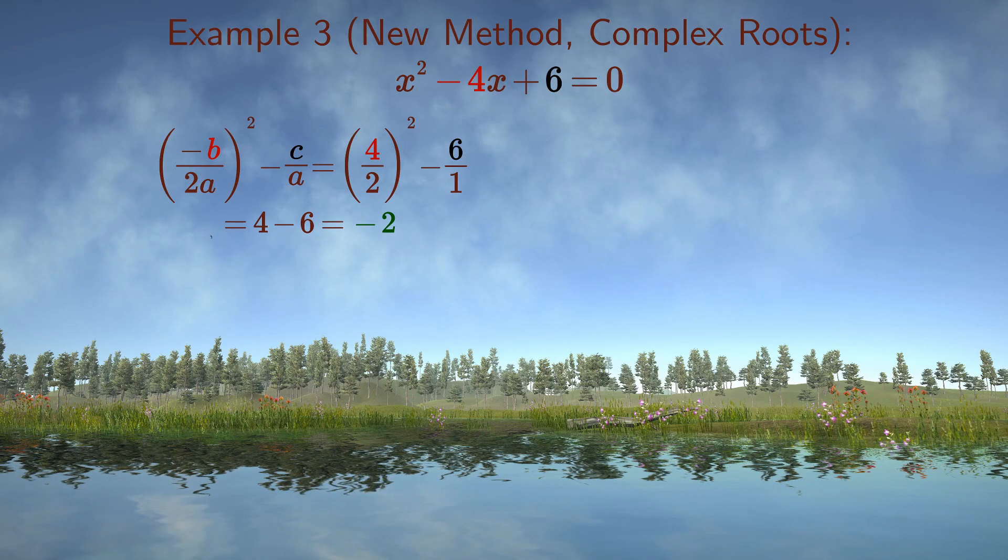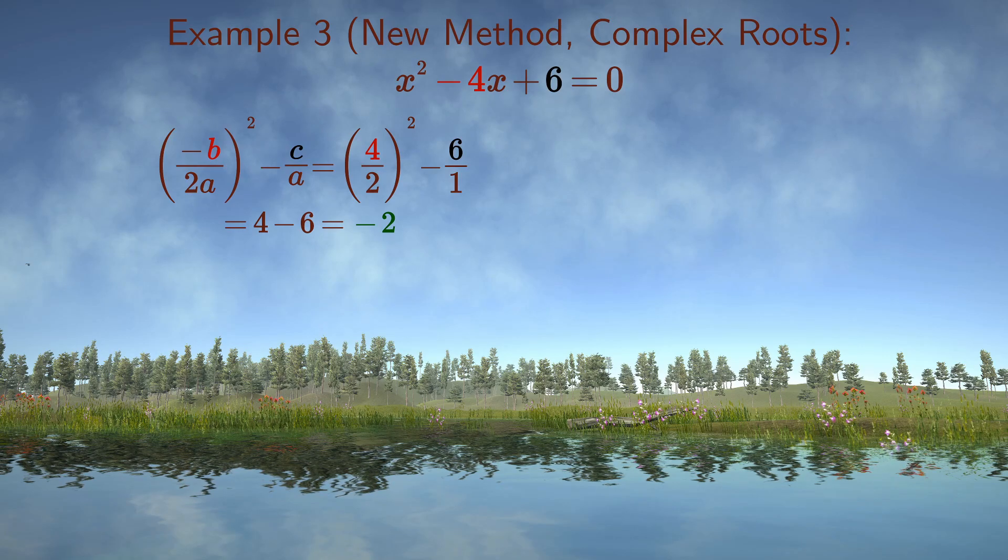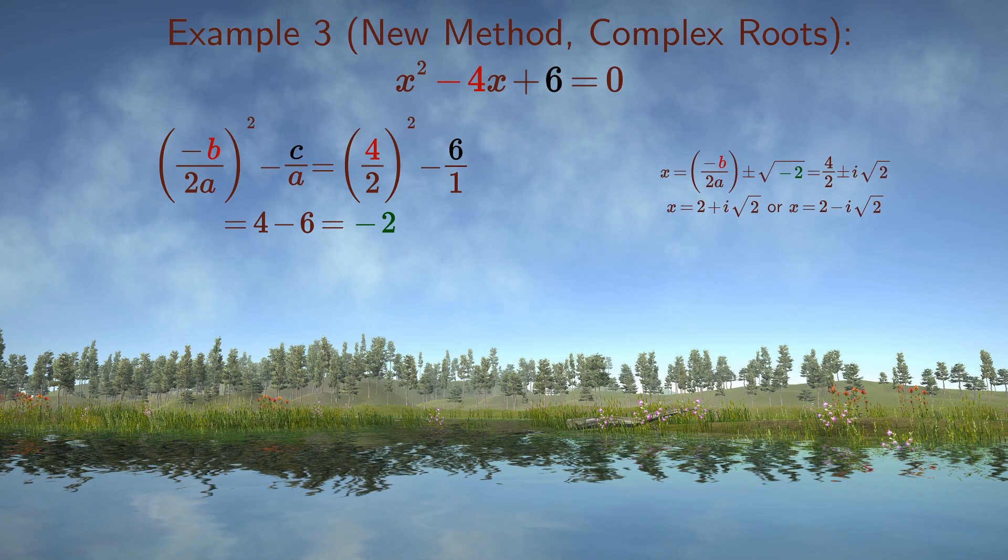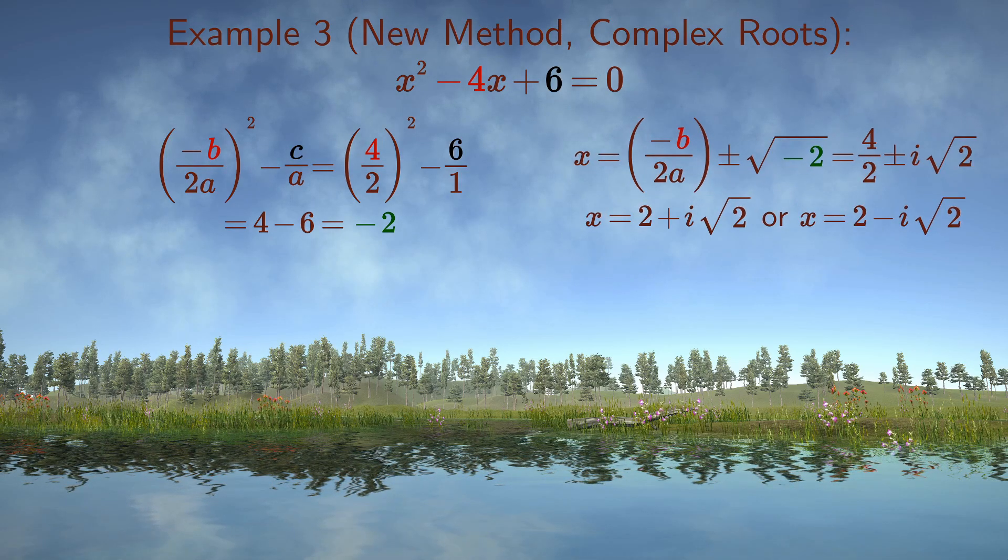You take minus b over 2a equals 4 over 2, or 2, square it to get 4, and subtract 6 to give you minus 2.